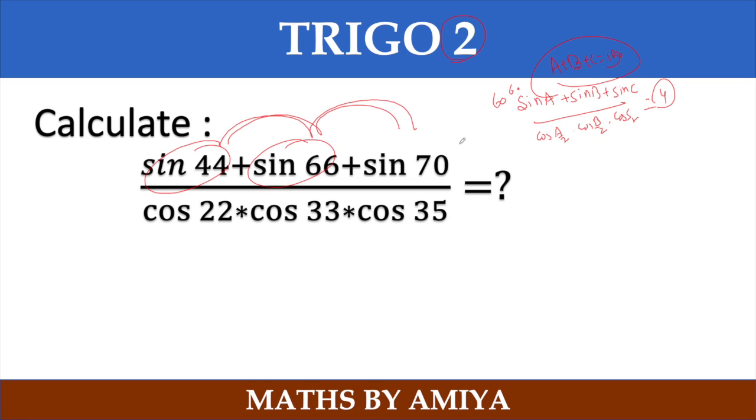Here also put sine 60, put sine 60, put sine 60. And this becomes half, so cos 30, cos 30, cos 30, you will get answer is nothing but 4.